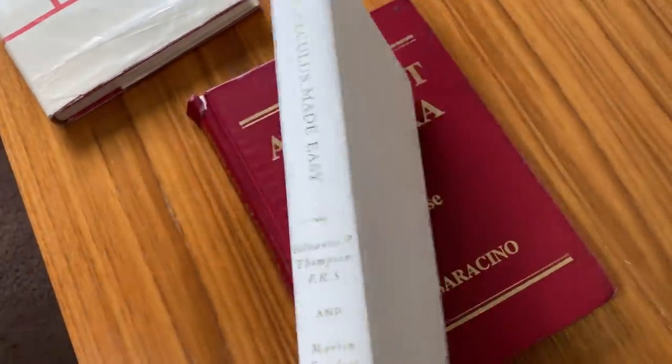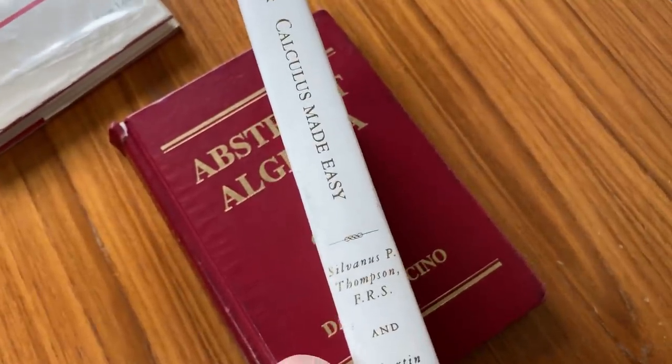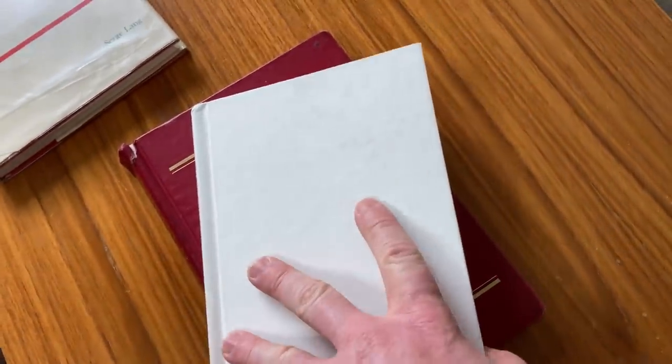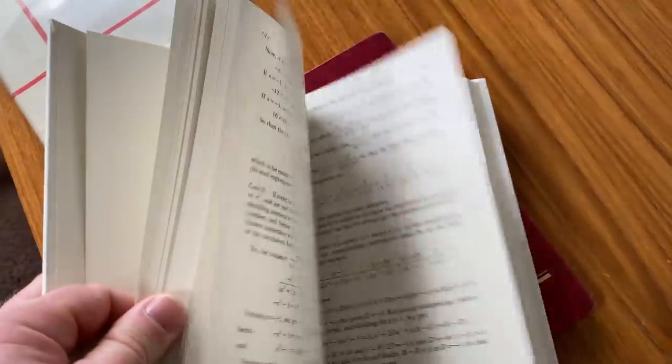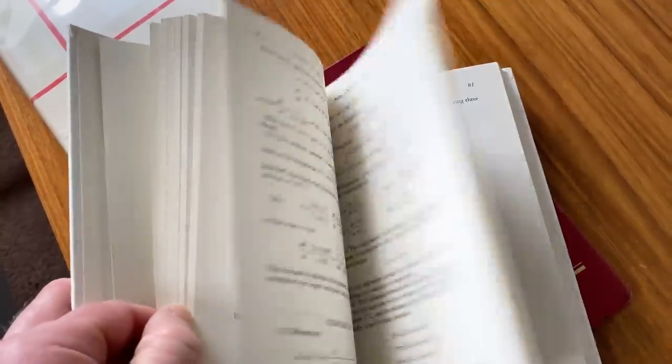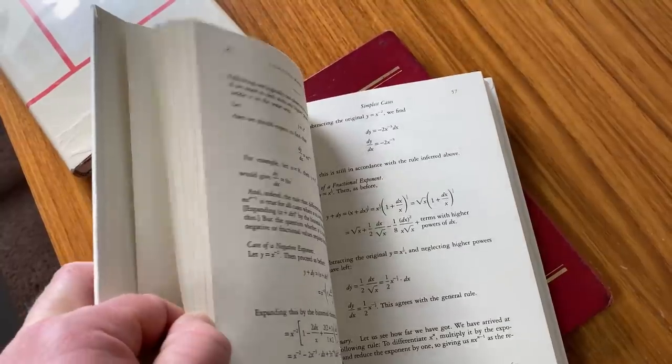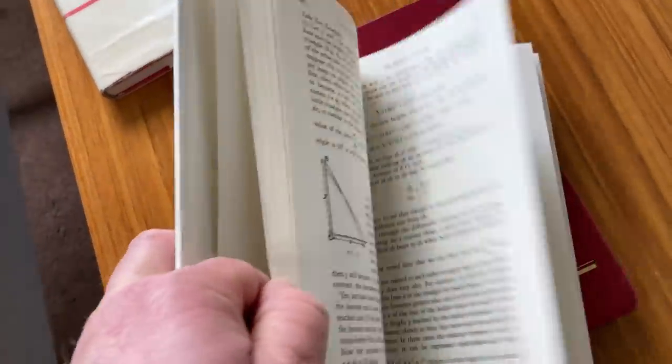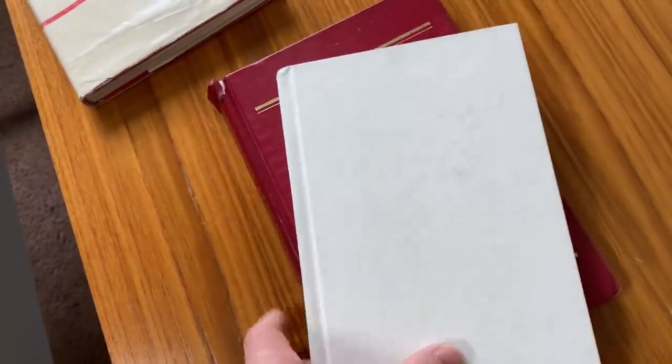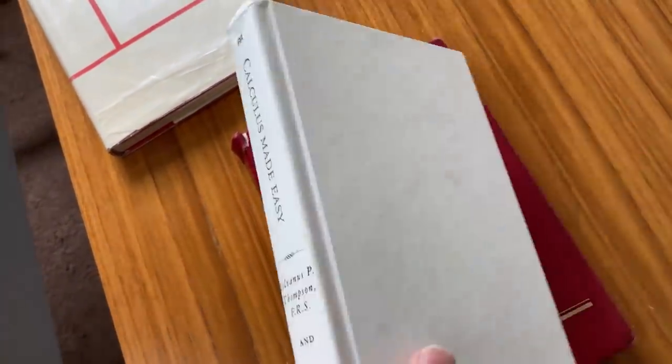The second book was Calculus Made Easy by Sylvanus Thompson. And this book is readable simply because it's written in such a unique way. There is no other calculus book in existence that's written in this way. It's just very different. Again, written by the legendary electrical engineer Sylvanus Thompson. Worth picking up. And again, you can probably get it for just a few dollars, just like the Lang book.